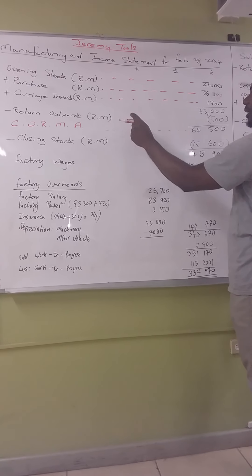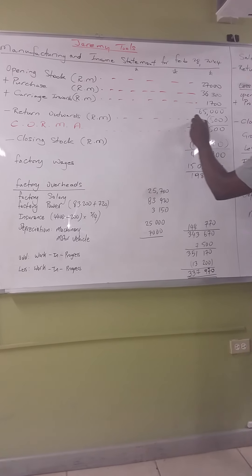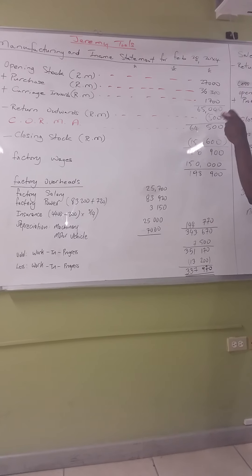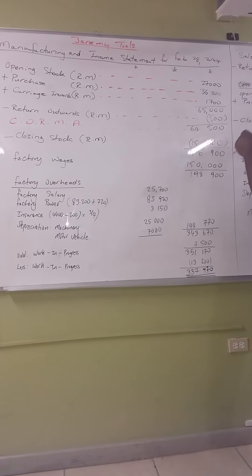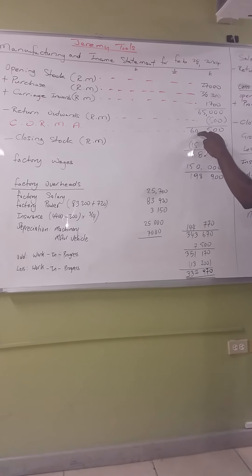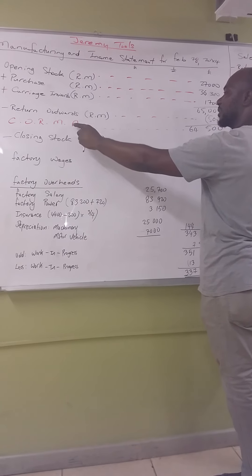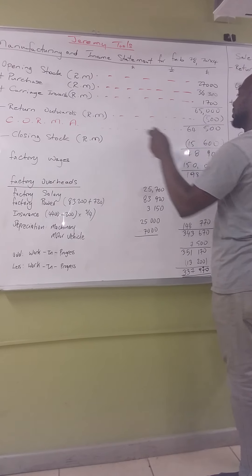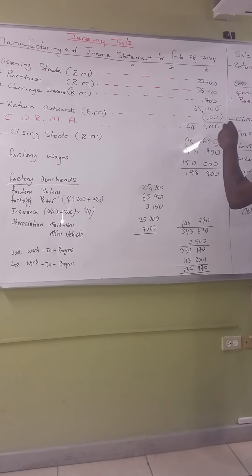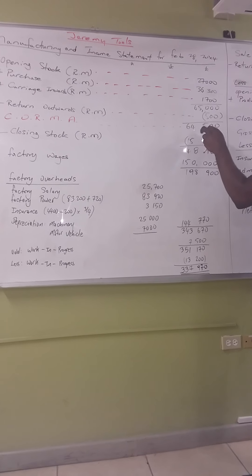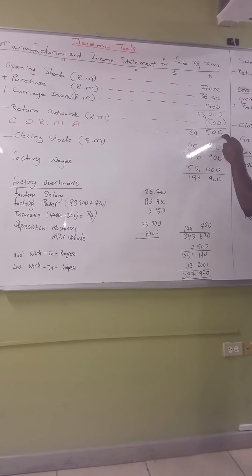Next, you subtract your return outwards on raw material. In this case it was 500. 65,000 minus 500 gives you 64,500, which is known as your cost of raw material available. So your cost of raw material available is 64,500 — this is what you have available.